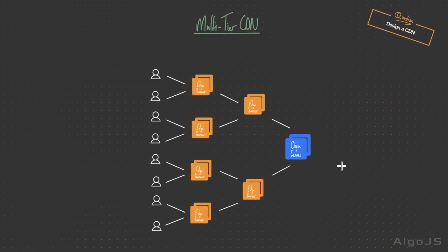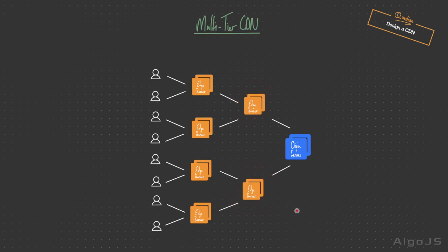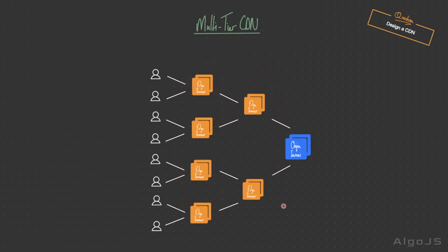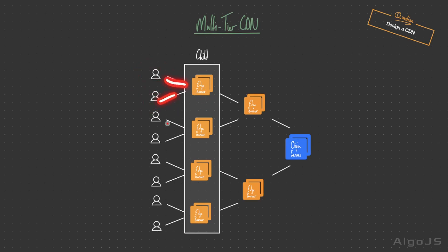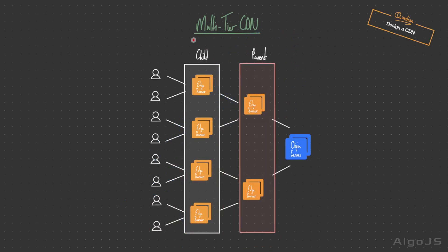A better alternative is to use a multi-tier CDN, categorizing edge servers into tiers based on geographical location, network proximity, or server capabilities. The first is the child tier — edge servers closer to end users, responsible for handling user requests, caching frequently accessed content, and serving as the first line of defense. The second is the parent tier — a higher-level tier with fewer but more powerful servers, responsible for storing and managing a broader range of content including less frequently accessed or large files.